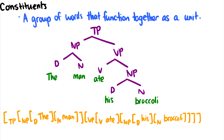So the question is: is 'man ate' a constituent? Is that a group of words that function together as a unit? And the answer is no. We'll see some informal tests that tell us why it's not a constituent. But also, if you look at this tree structure, there's no single node you can pick up that only picks up 'man' and 'ate.' So there's no way to pick up just 'man' and 'ate' on their own — therefore, they're not a constituent.